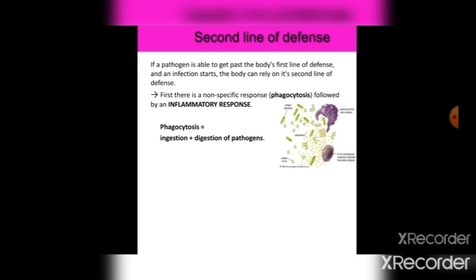The second line of defense activates if a pathogen is able to get past the body's first line of defense — crossing the barrier and entering the body. When an infection starts, the body relies on its second line of defense. First, there is a non-specific response: phagocytosis, followed by an inflammatory response. Phagocytosis is a non-specific response and equals ingestion plus digestion of pathogens.